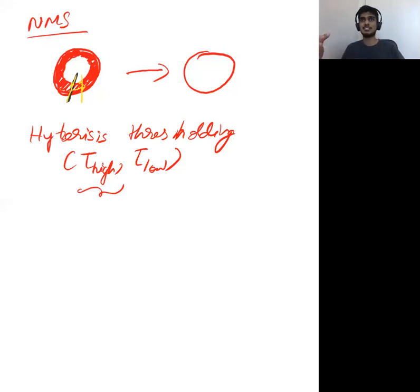Then there are some other pixels which are called as weak pixels whose gradient magnitude is below a threshold, that is tau low. And you know that they are very weak and they are not part of any edges. So you just discard them. And there are some other pixels in between these two.